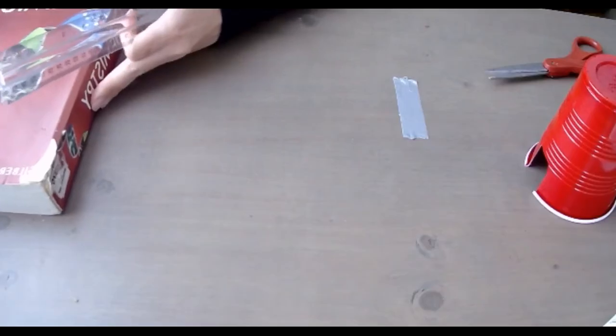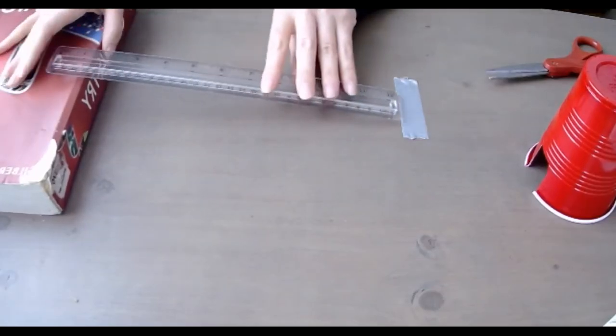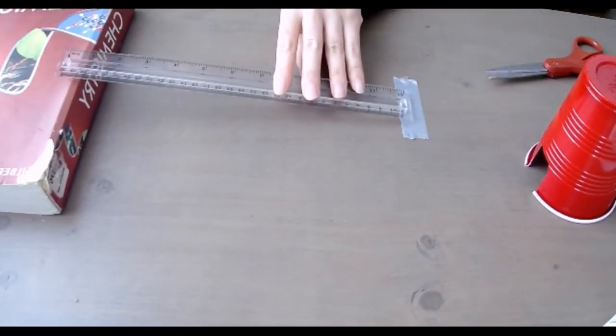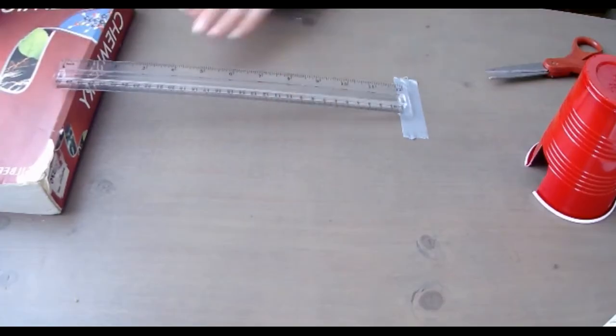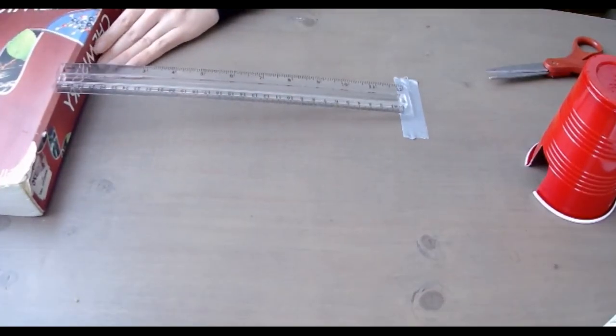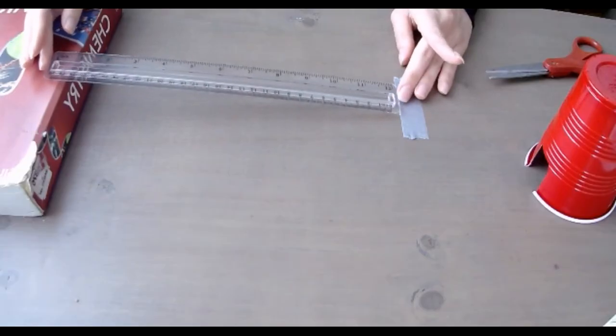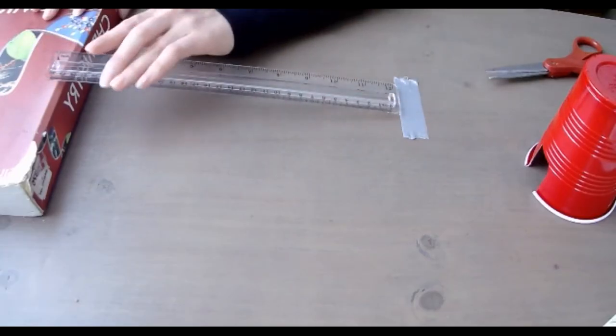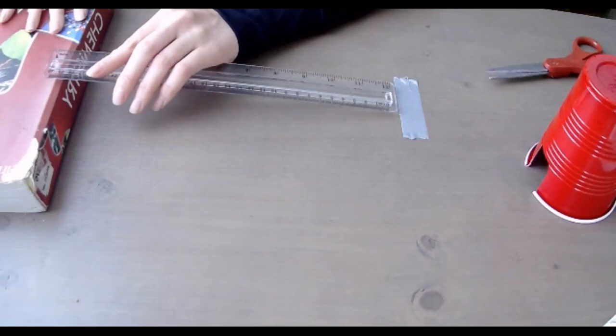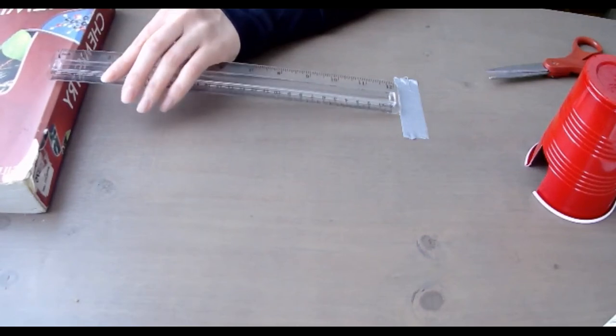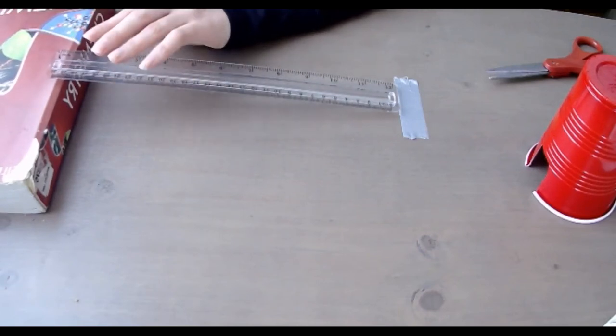Then you'll set up your ramp. Take your ruler and place it on top of the book so it becomes a ramp for your marble to roll down. You should only have a little bit of the ruler sitting on top of the book, just enough to stay balanced as you can see here.